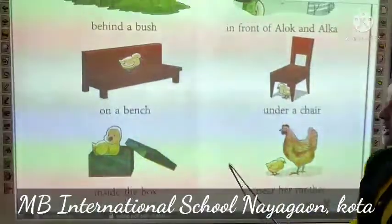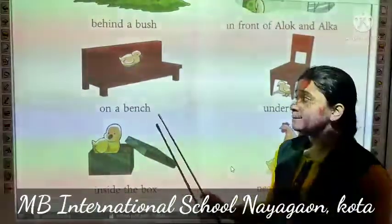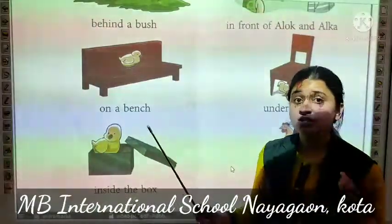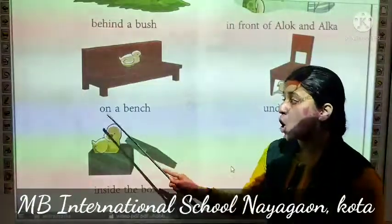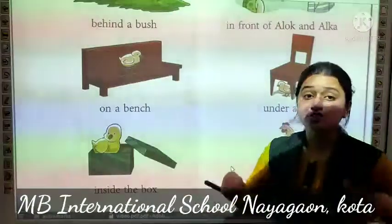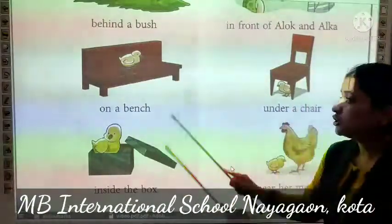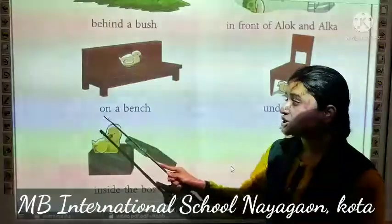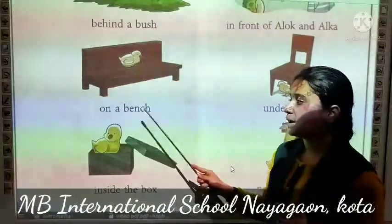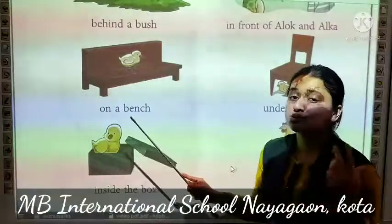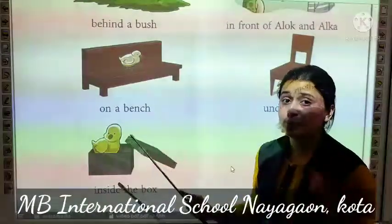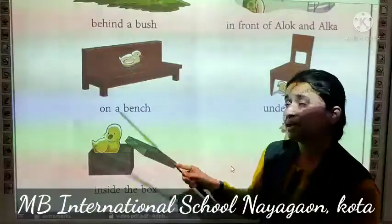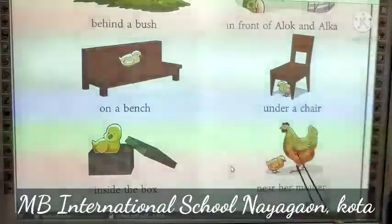Now, a chik is on a bench. Ab yaha pere prepositions word kya hai? On. On means upar. Toh chik kaha hai? Bench ke upar hai. A chik is on a bench — prepositions word on means upar, chik ki place bata raha hai ki chik hai bench ke upar.